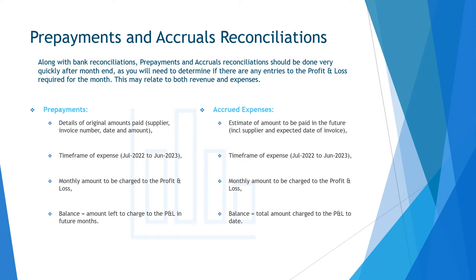Accrual balance sheet accounts may include things like accrued water fees and electricity or other expenses which are billed after the service is provided, either quarterly or annually. Providing for staff bonuses is another example. With accrued expenses, you should show the estimate of the amount to be paid in the future, the time frame of the expense, and the monthly amount to be charged to the profit and loss. The balance will equal the total amount charged to the P&L to date. Where prepayments are generally based on a known amount already paid, accruals will generally be based on assumptions around historical values or estimated future value to be paid.